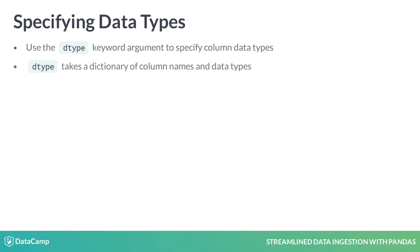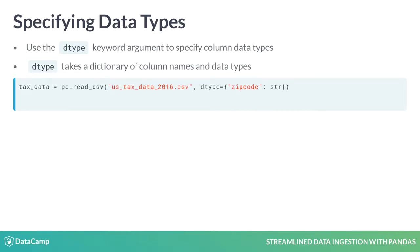dtype takes a dictionary, where each key is a column name and each value is the data type that column should be. Note that non-standard data types, like Pandas categories, must be passed in quotations. Here, we specify that the zip code column should contain strings, leaving Pandas to infer the other columns.